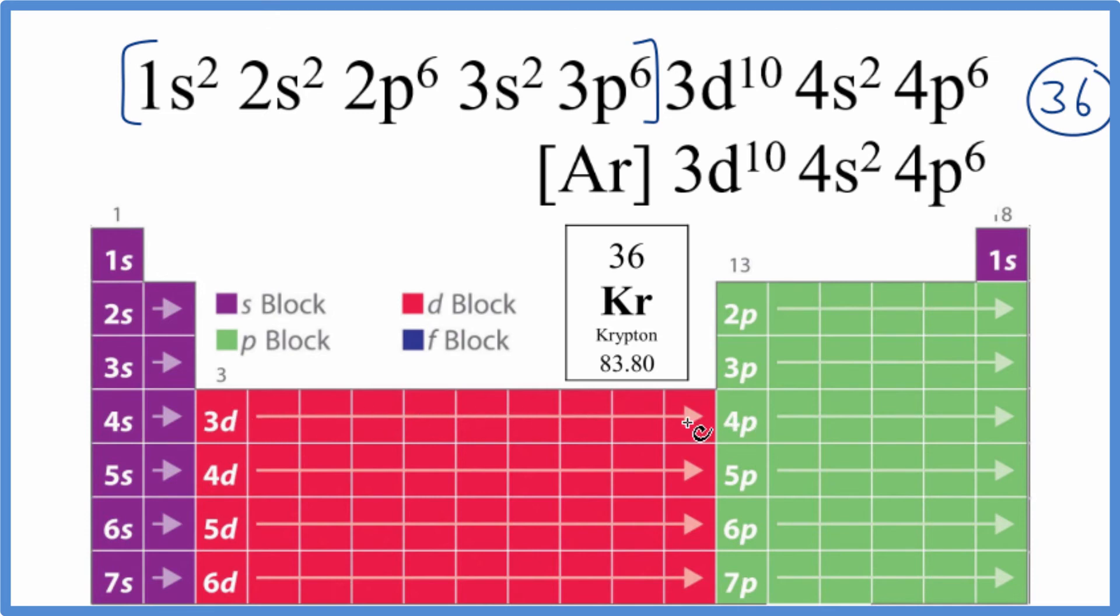At this point we've used 30 of the electrons. We have 36 total, and we're looking for 4p⁶, so 4p¹, 2, 3, 4, 5, 6.